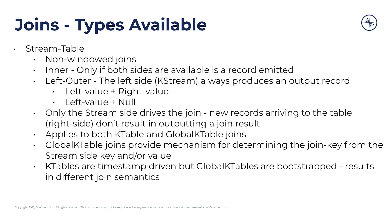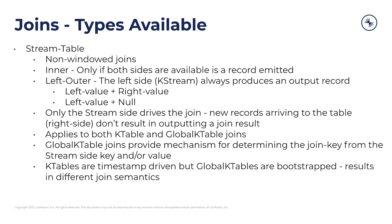All this applies to both the KTable and the Global KTable joins. But the Global KTable provides a mechanism for determining the join key from the stream side key and/or value. The Global KTable is useful because you don't actually have to make sure that the keys are matched ahead of time — you can look up any key you want in the Global KTable and join that with the stream side key or event. One final key difference between the normal KTable and the Global KTable join is that Global KTables are bootstrapped, meaning you read all of the events from the topic as soon as they occur into the Global KTable. Whereas with the KTable, the events and the join itself are timestamp-driven — events in the KTable with a higher timestamp than events in the KStream are not joined with those earlier events until time has advanced to that point. With the Global KTable, everything is considered static information and all data is bootstrapped in ahead of time.